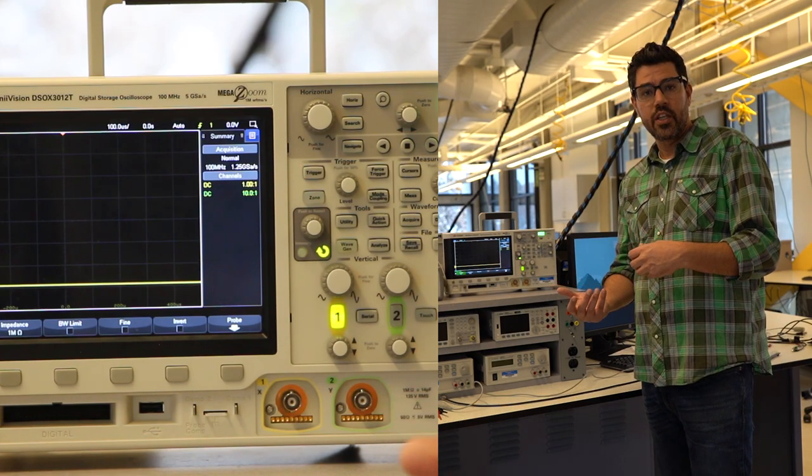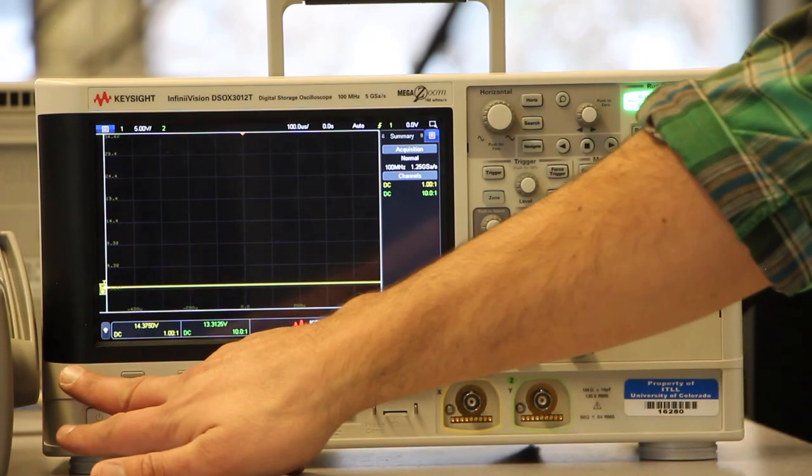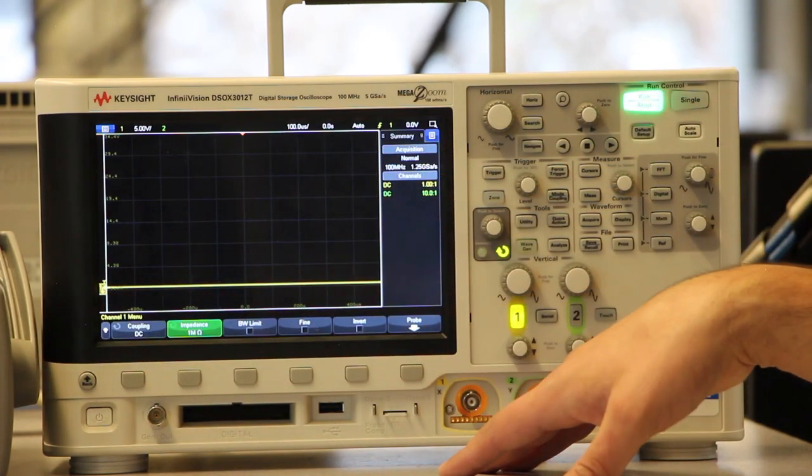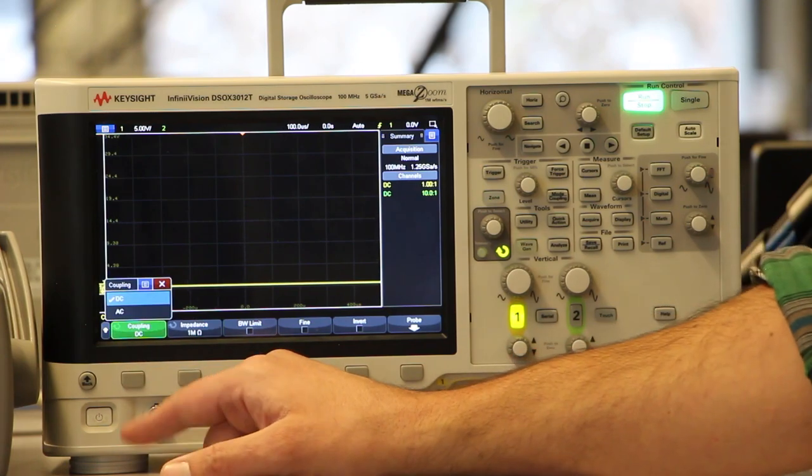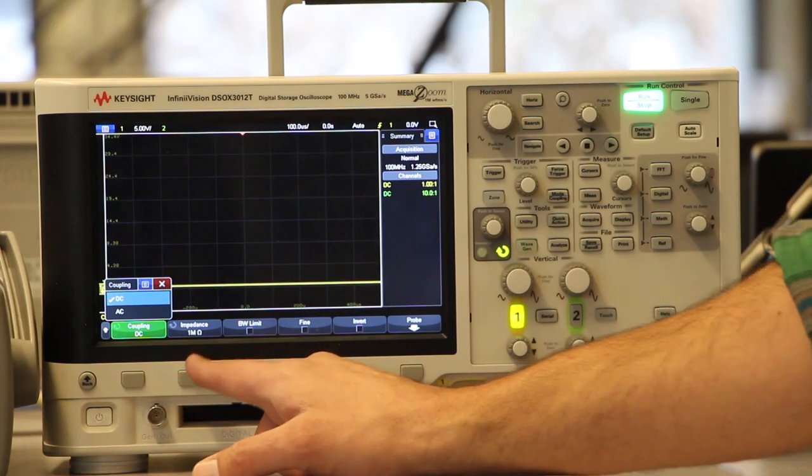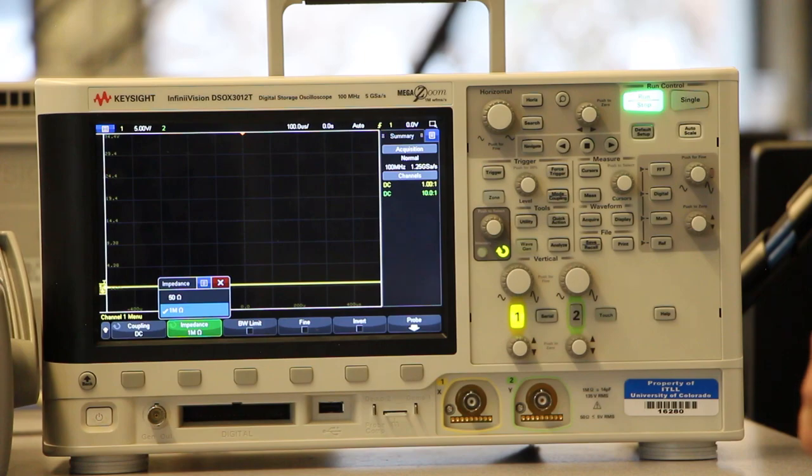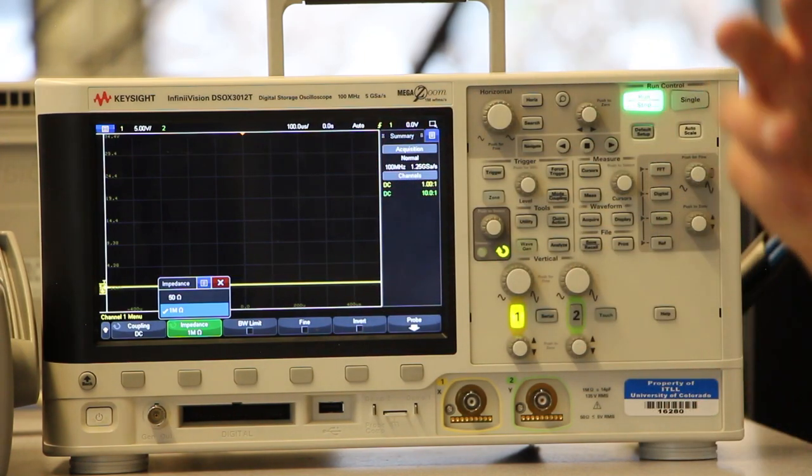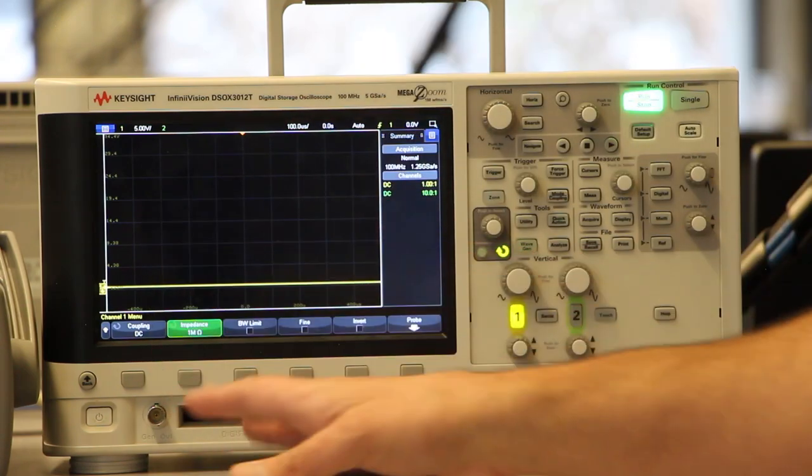All right, so the next thing in terms of initialization is we're going to have to set up the channel. So I'm going to push one and you'll see now I can get more functions that pop up here on the horizontal bar. So a couple of things I want you to pay attention to. One, the coupling should be DC for what we do. Also in terms of impedance you want one mega ohm. Now there are reasons to use 50 ohms and reasons to use an AC coupling but that's not for us. This is more for higher frequency range. So for us we're always going to use one mega ohm and DC coupling. Now let me just say a little bit about this one mega ohm. I want you to remember that the oscilloscope is trying to measure the system and we don't want in the process of measuring the system to affect the system.